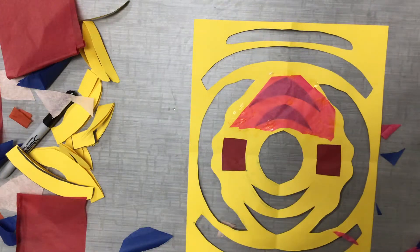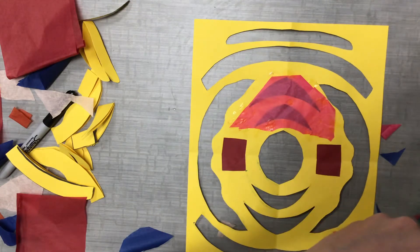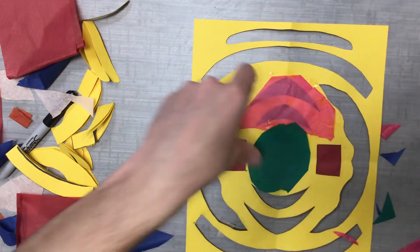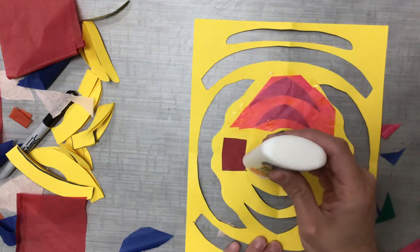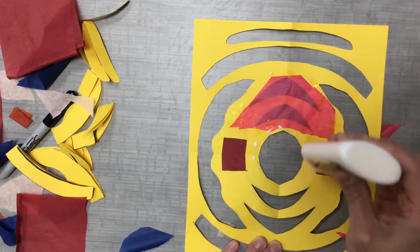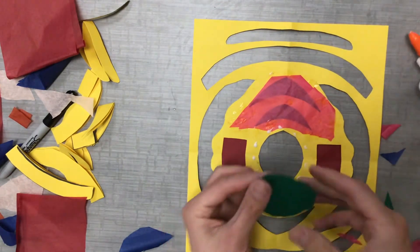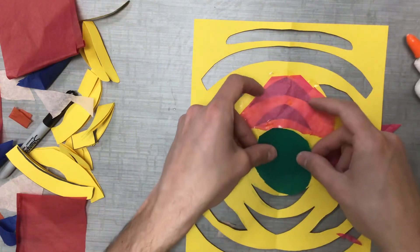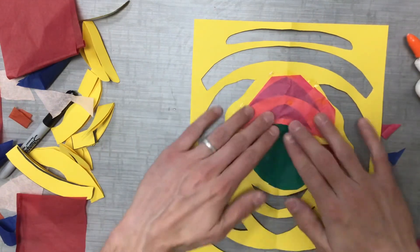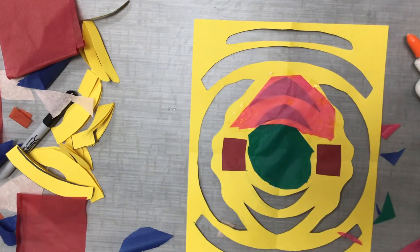And then I'll just put down glue going around it. Just like that. Okay. It's your turn to try to do tissue paper over your holes. Good luck.